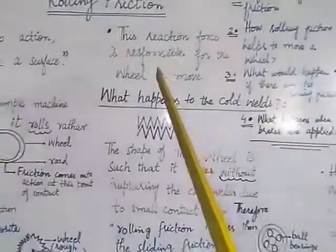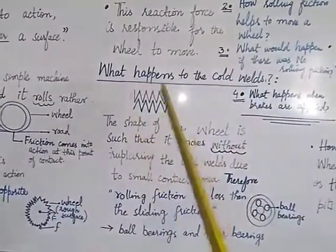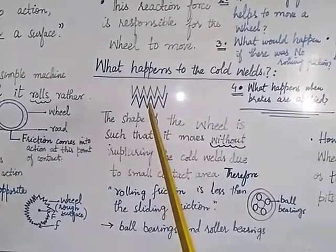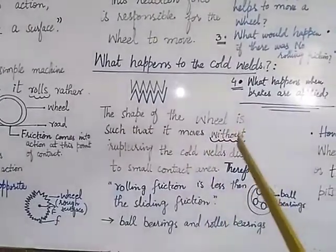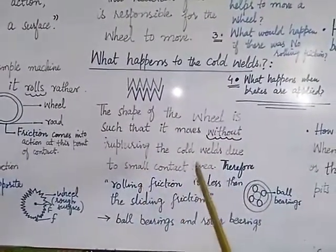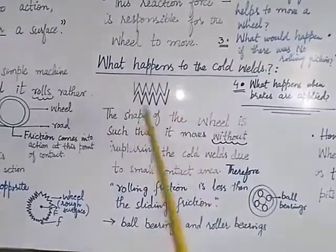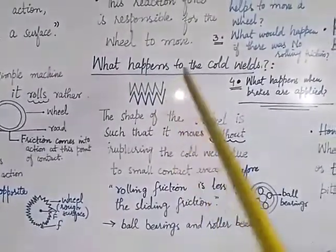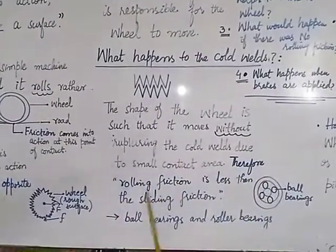The reaction force is responsible for the wheel to move. Cold weld is the structure in which the pits and bumps of one surface are interlocked with the pits and bumps of another surface. The shape of the wheel is such that it moves without rupturing the cold welds due to the small contact area — cold welds are formed and removed again and again. Therefore, rolling friction is less than sliding friction.